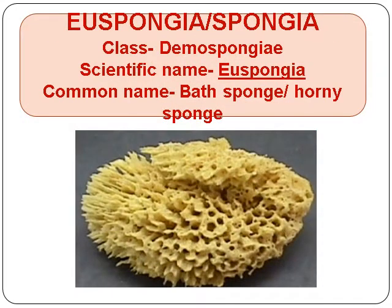Euspongia, or Spongia. Class Demospongiae. Scientific Name: Euspongia. Common Name: Bath Sponge or Horny Sponge.